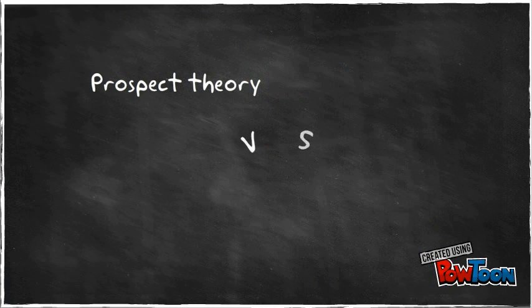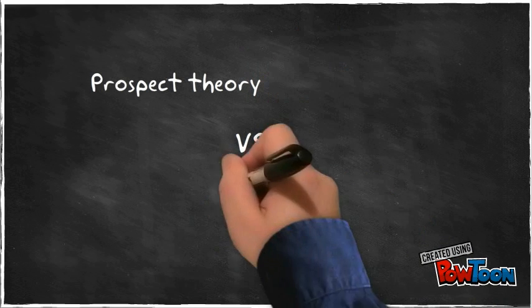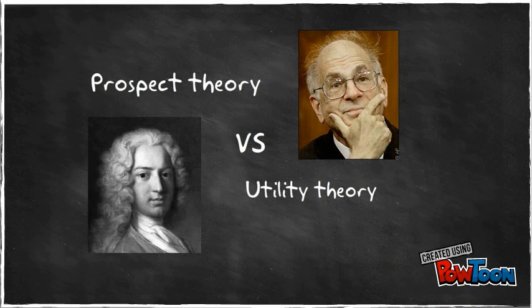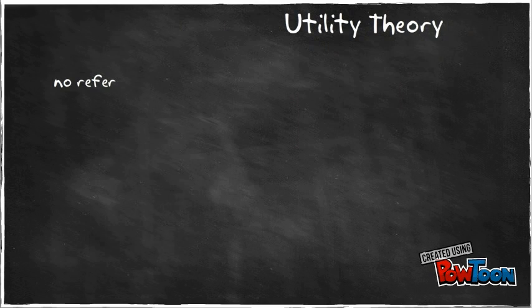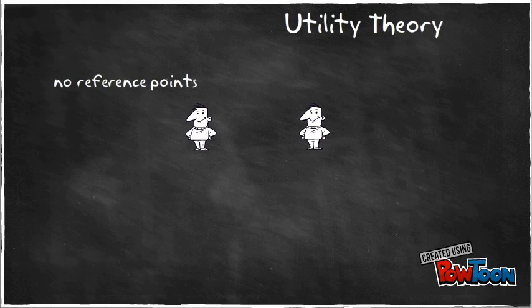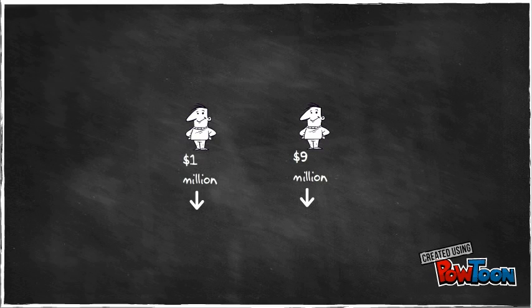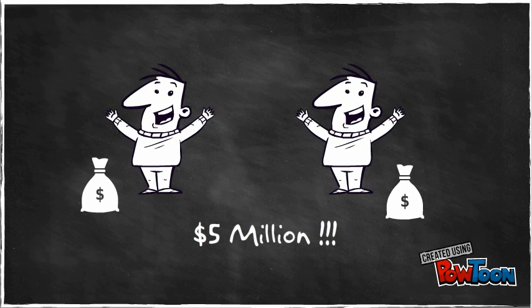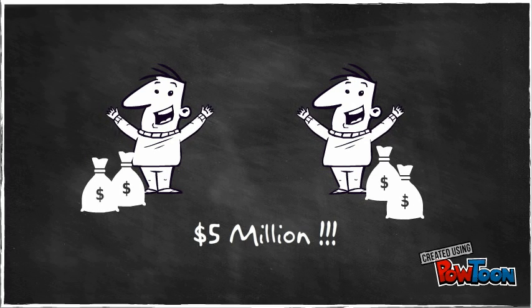Now that we've gone over the general ideas of both Utility and Prospect Theories, we'd like to highlight some key differences. Kahneman addresses two key differences. First, Utility Theory does not take into account where you started from and how it will feel to shift from that point of view. For example, if you have one million dollars and your friend has nine million dollars, and tomorrow you both have five million dollars, how happy will you both be? According to Bernoulli, both you and your friend will be equally happy, as you both have five million dollars and therefore the same amount of utility from the money.